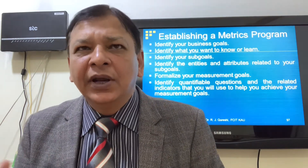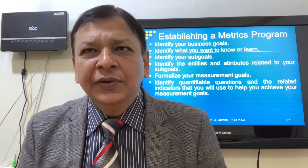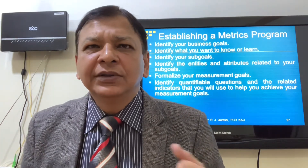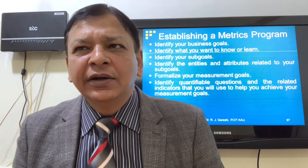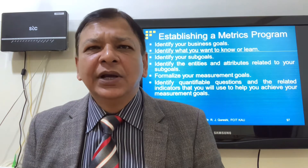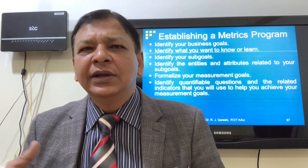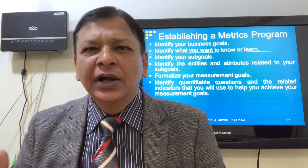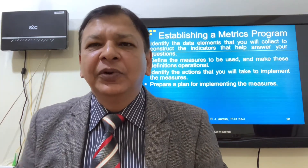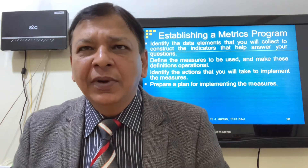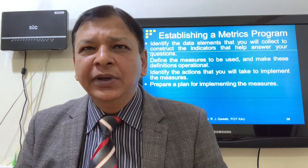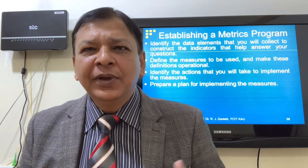Establishing a metrics program involves: identifying your business goals, identifying what you want to know or learn, identifying sub-goals, identifying entities and attributes related to sub-goals, formalizing measurement goals, identifying quantifiable questions and related indicators, identifying data elements to construct key performance indicators (for CMMI), defining the measures and making definitions operational, identifying actions to implement the measures, and preparing a plan for implementing the measures.